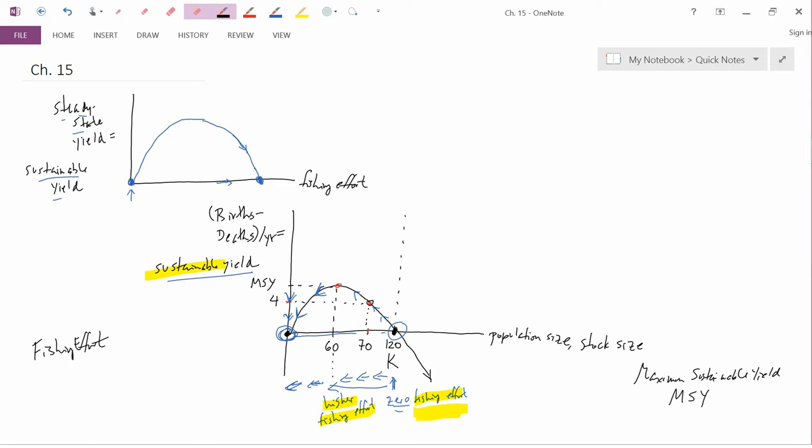So we're going to draw a new graph, and the horizontal axis is going to be fishing effort, just like in the upper left. But the vertical axis is going to be dollars.